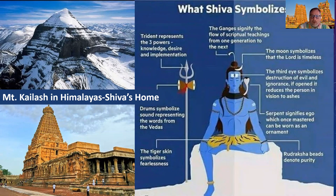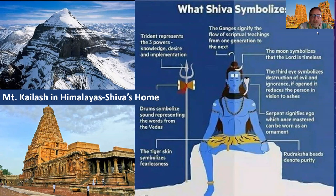Shiva often has water flowing through his hair because he once raised the holy river of the Ganges up to help his family and friends. He often has a moon symbolizing the idea that he controls time, partly because he controls life and death with the destruction of ignorance. He also wears beads all over his body that Shiva devotees also wear — often red and black, symbolizing purity.